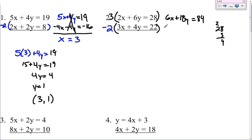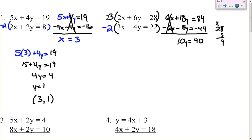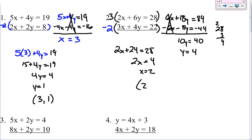Then on the bottom, negative 2 times 3 gives you negative 6x. Negative 2 times 4 gives you negative 8y. And negative 2 times 22 gives you negative 44. The x's cancel. 18y minus 8y is 10y. 84 minus 44 is 40. Divide by 10 — y equals 4. Now we can plug that back in: 2x plus 6 times 4, so it would be 24, equals 28. Subtract the 24. You get 2x equals 4, so x equals 2. So your answer would be (2, 4).